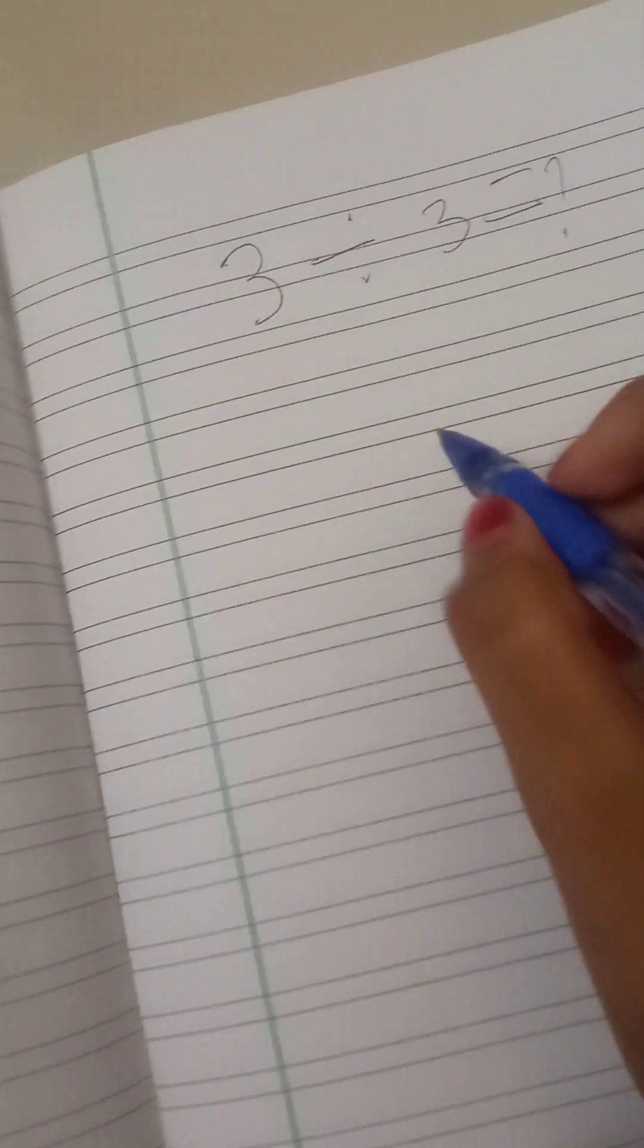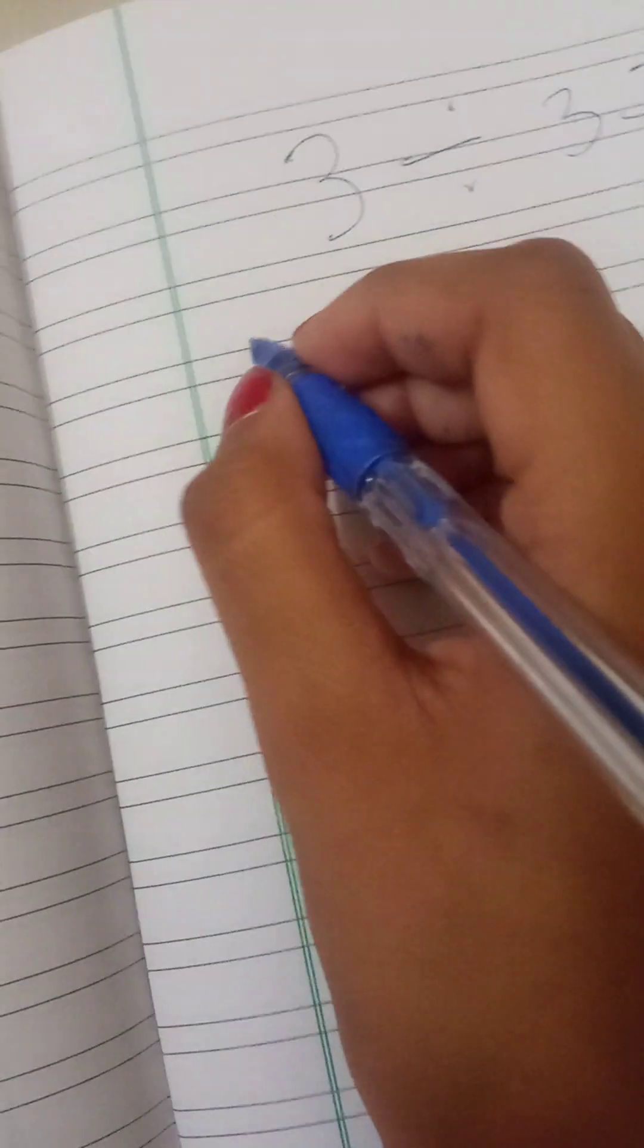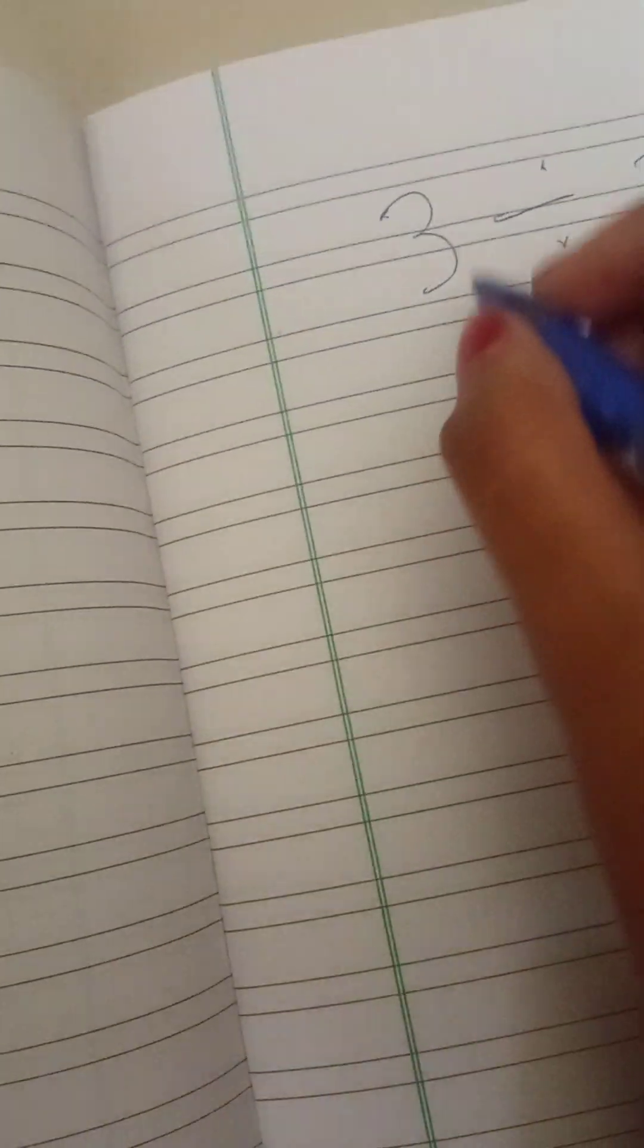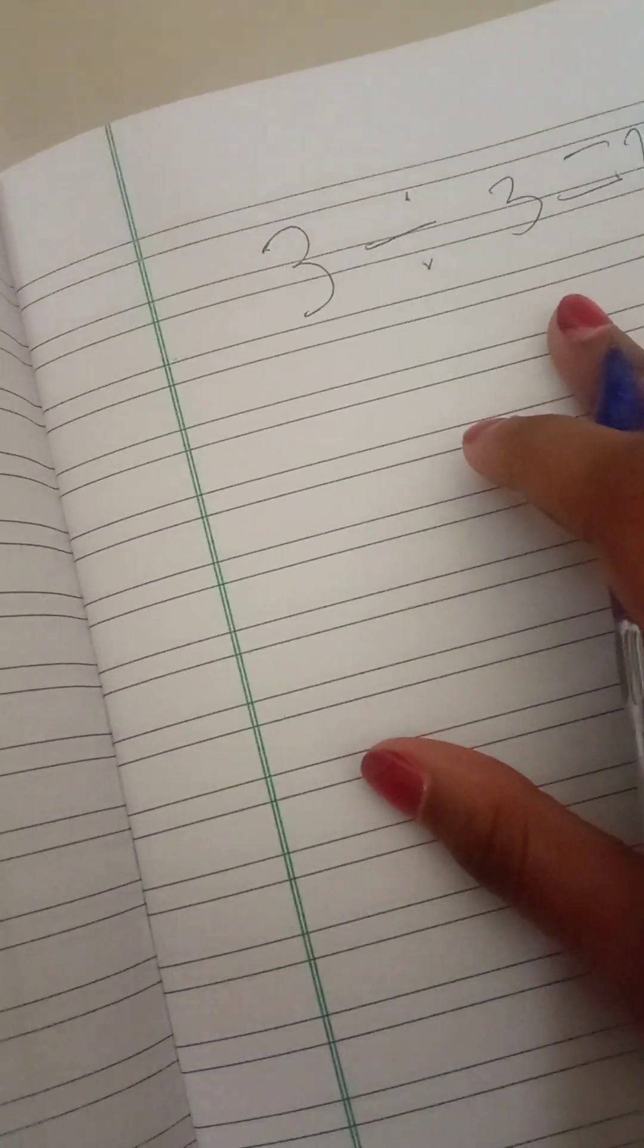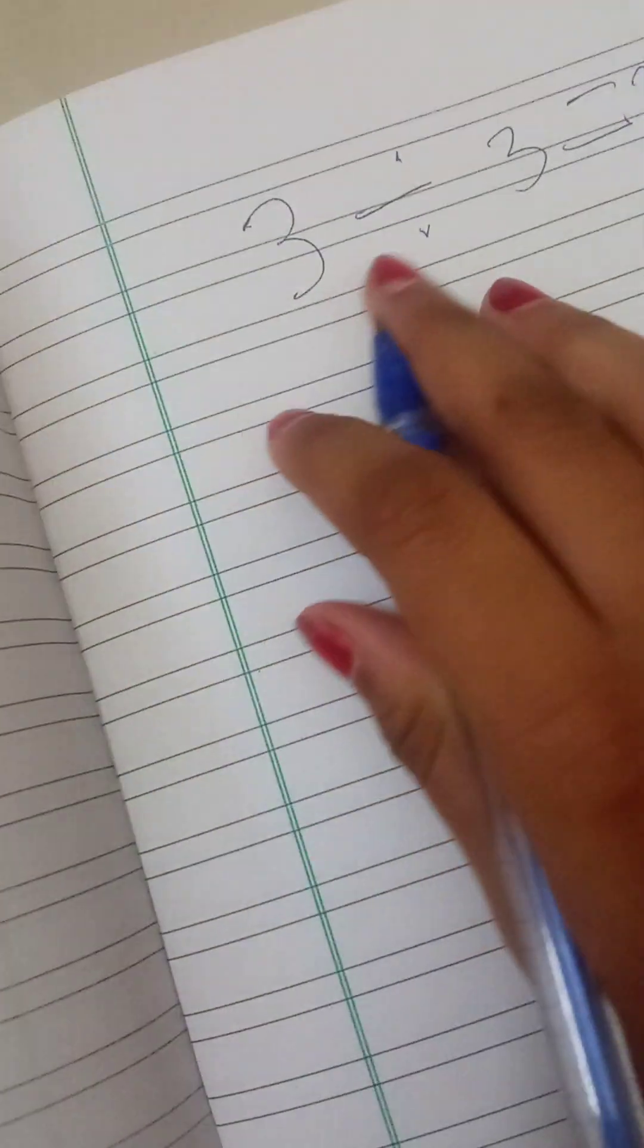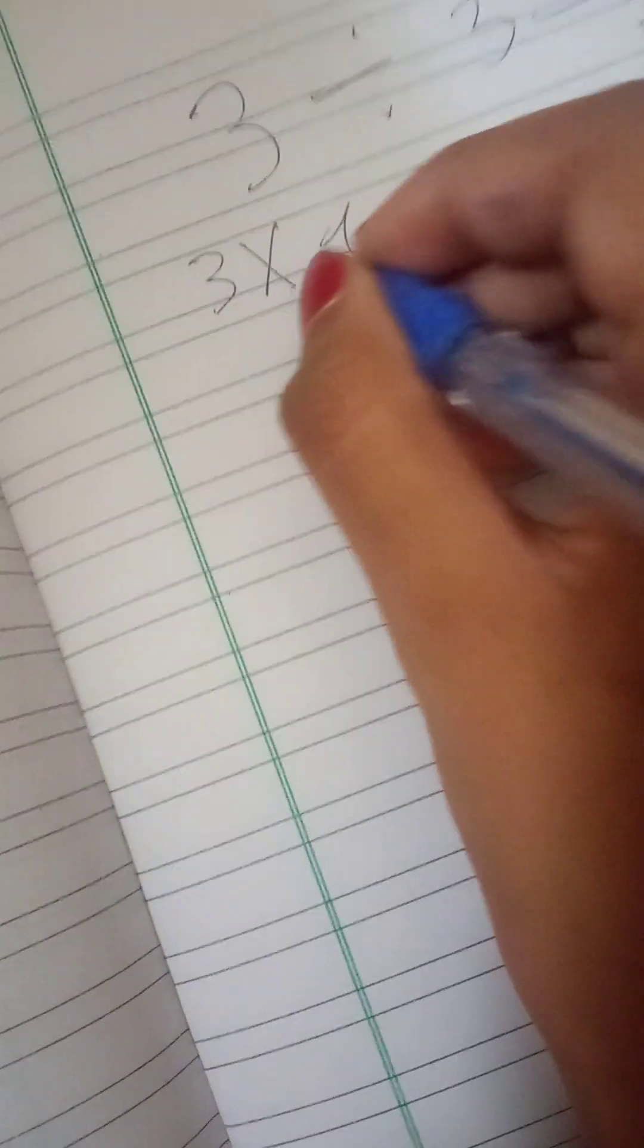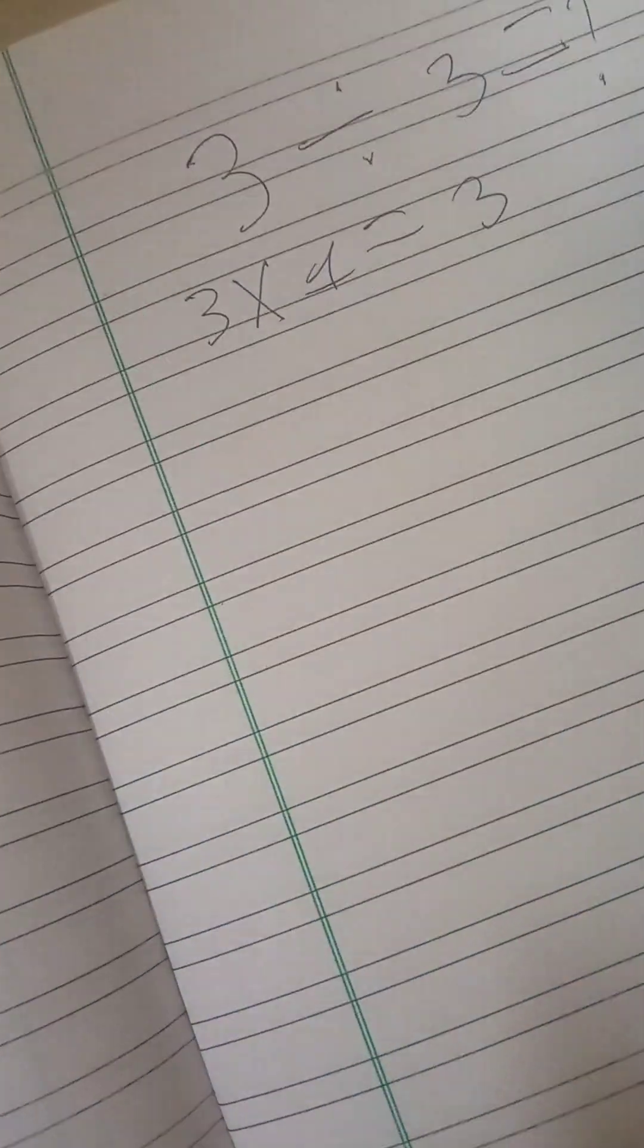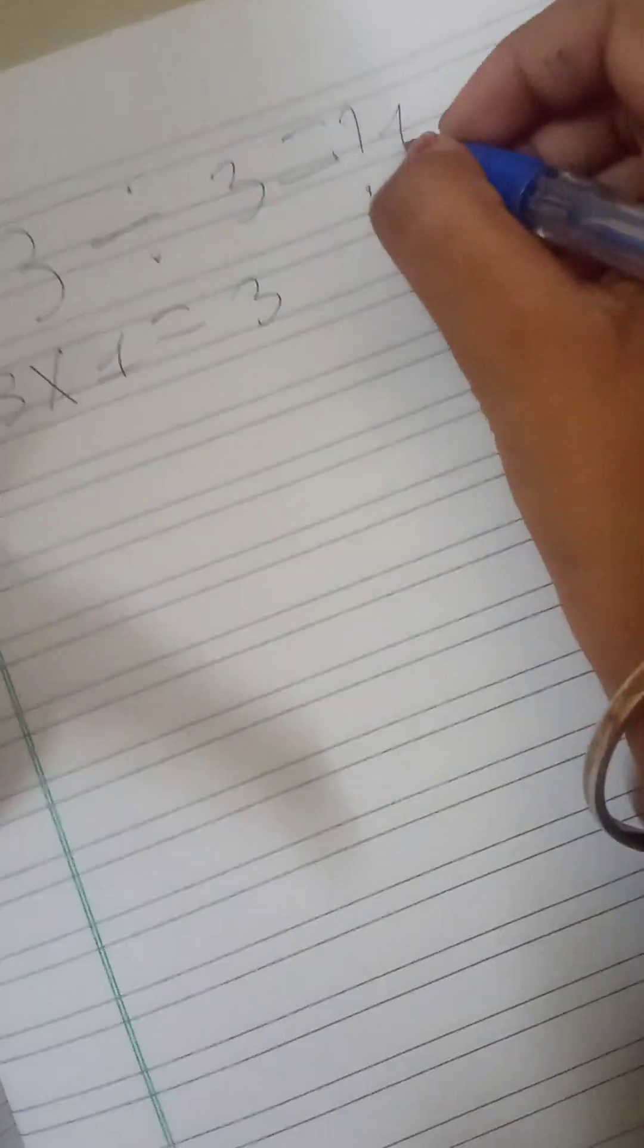Where 3 comes in the 3 tables, that means we have to multiply it. There's 3, means we have to write 1. Exactly, we have to write 1.